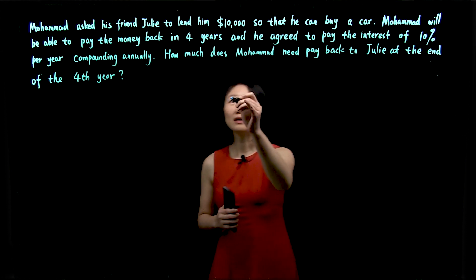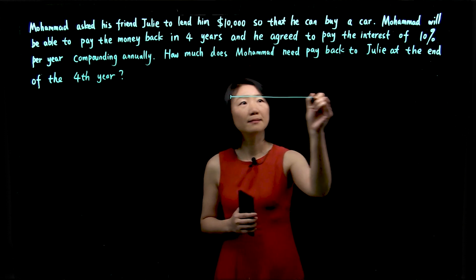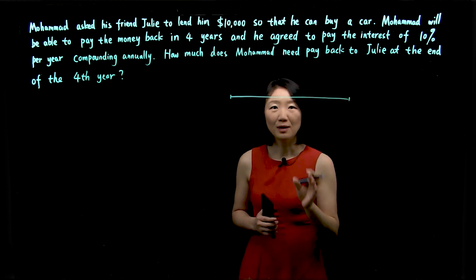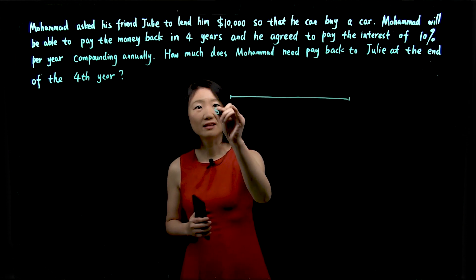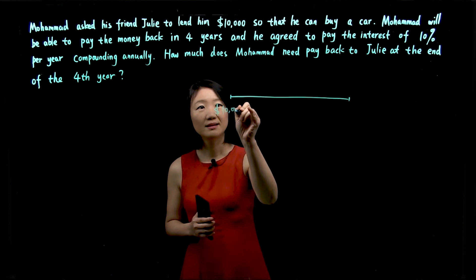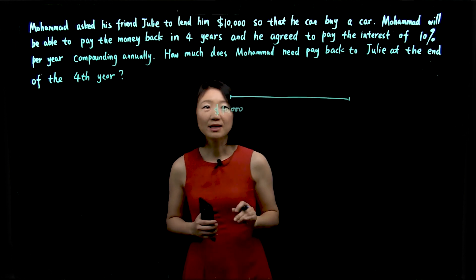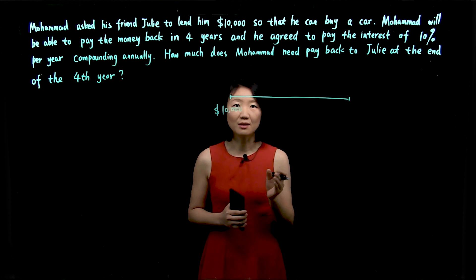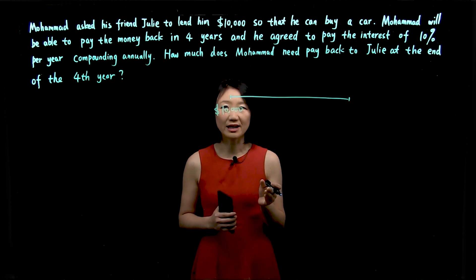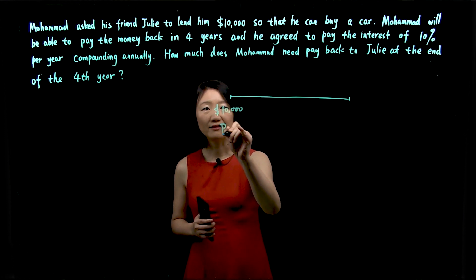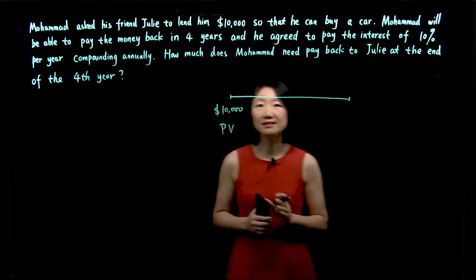Let's first draw a timeline. Mohamed would like to borrow $10,000 now in order to buy a car. This $10,000 is called the principal, also known as present value. We have PV, short for present value.